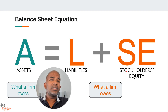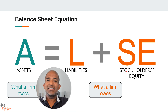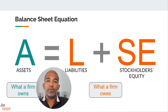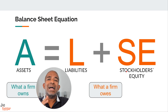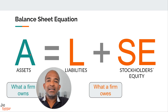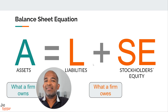Before we explore journal entries with an example, let's briefly refresh our understanding of the foundation of accounting - that is the balance sheet equation. Think of the balance sheet equation like a snapshot of a company's financial position at any given point in time. The left side, our assets, represents everything the firm owns: the cash in the bank, the inventory on the shelves, even the buildings and machinery. This is the 'what the firm owns' side of the equation.